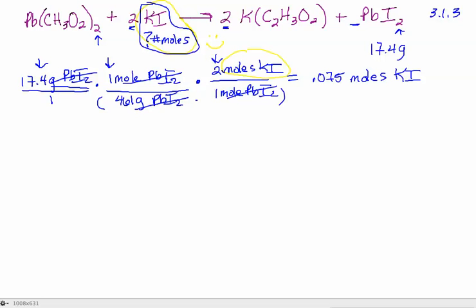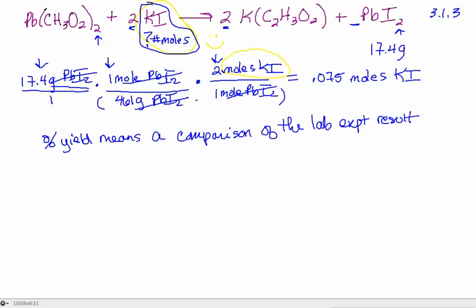Now to the question you really asked, which is, if you really started in your lab with one mole of potassium iodide, what was the percent yield for the experiment? Percent yield means a comparison of the lab experiment result with the mathematically derived result. What did you get compared to what should you have gotten or derived?